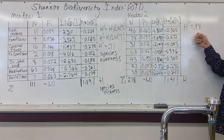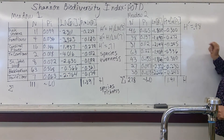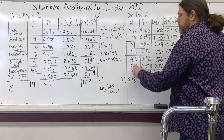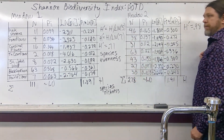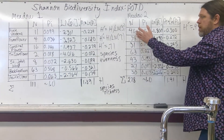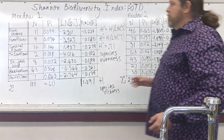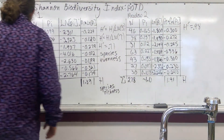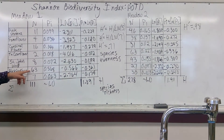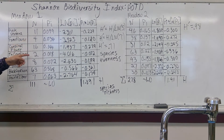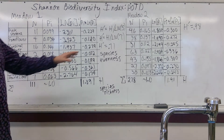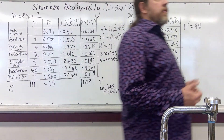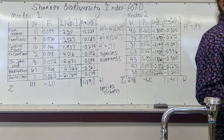Not surprisingly, we see a much higher evenness score in Meadow 2 than Meadow 1. Notice that all of the species in Meadow 2 are well represented, whereas Meadow 1 has quite an imbalance, with Black-Eyed Susan dominating and species like Fameflower and Tennessee Coneflower barely represented at all. Small wonder we're going to have a lower species evenness score for Meadow 1.